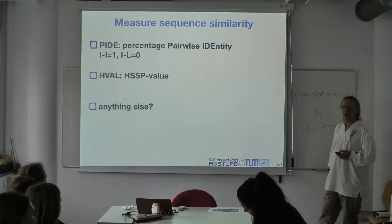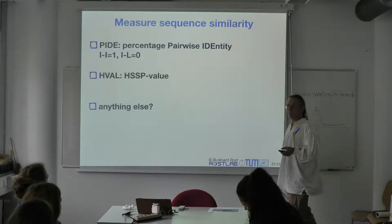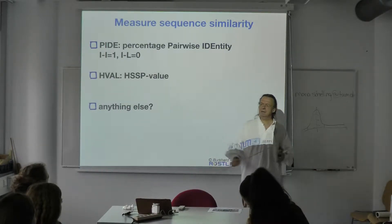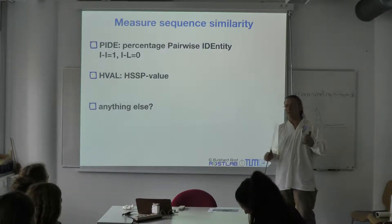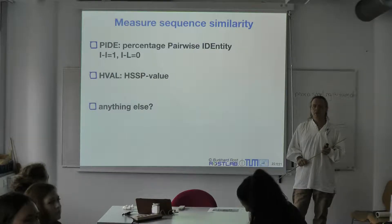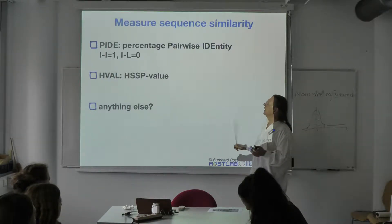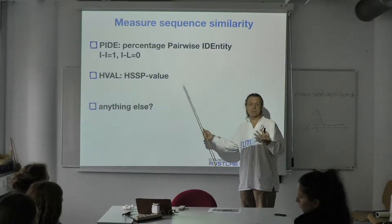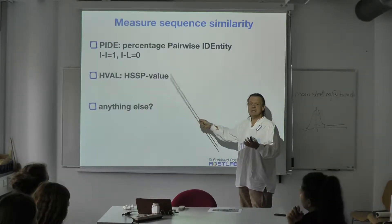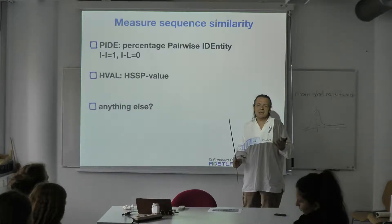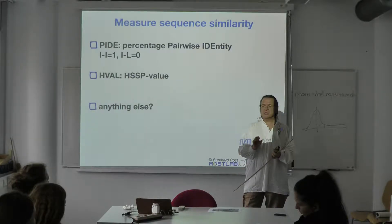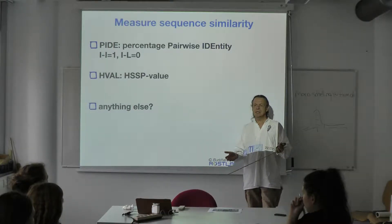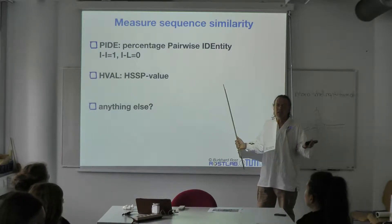How else can we measure sequence similarity and compare sequences? PID is the simplest — percentage sequence identity. The HSSP value adds length consideration: short alignments are valued differently from long ones. Something more biophysically insightful would be counting charged residues — this requires biological insight. For example, if you want to ask whether two proteins bind DNA similarly, positively charged residues are extremely important for answering that question. PIDE is really zero insight — the simplest thing you can count, like alphabetic or edit distance.